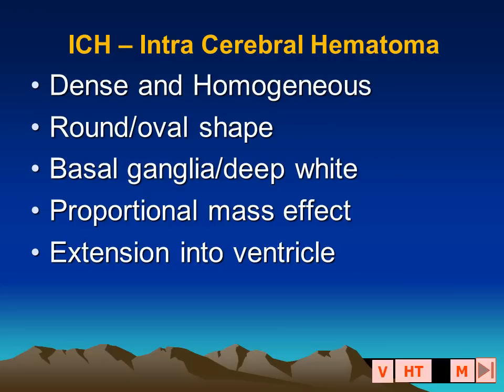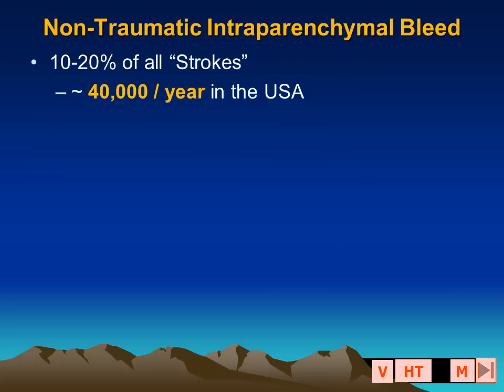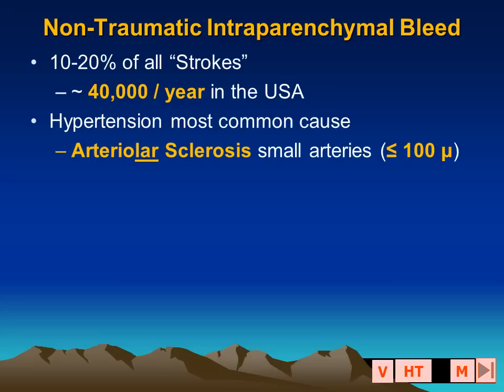Primary intracerebral hemorrhages are usually hyperattenuating and relatively homogeneous on an acutely performed CT scan, and they predominantly affect the deep parts of the brain. There may be extension into the ventricle, and the blood may then end up in the subarachnoid space. Non-traumatic hemorrhages represent up to 20% of all strokes.